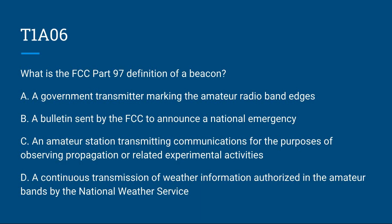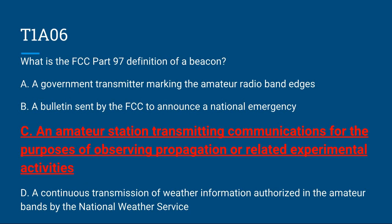T1A06: What is the FCC Part 97 definition of a beacon? A, a government transmitter marking the amateur radio band edges; B, a bulletin sent by the FCC to announce a national emergency; C, an amateur station transmitting communications for the purpose of observing propagation or related experimental activities; or D, a continuous transmission of weather information authorized in the amateur bands by the National Weather Service. The correct answer is C.